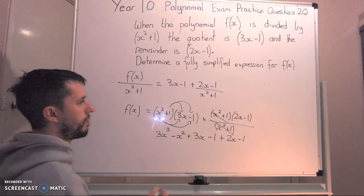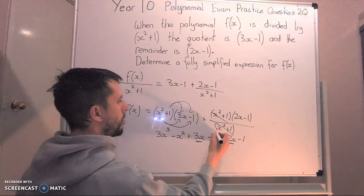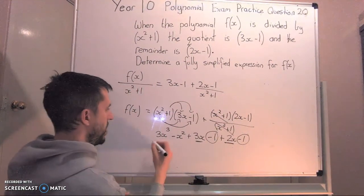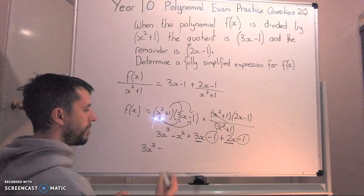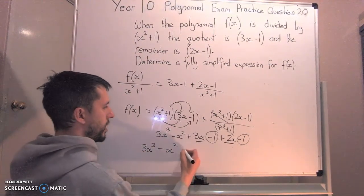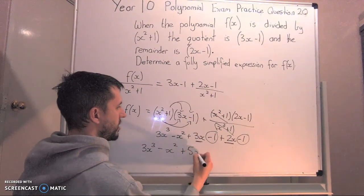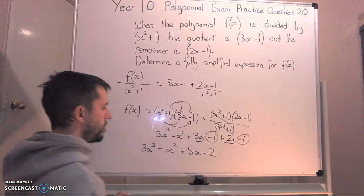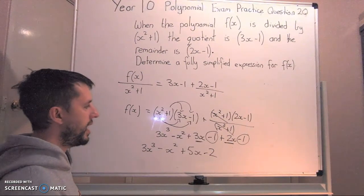Now I need to simplify. I've got 3x and 2x, and negative 1 and negative 1. That leaves me with 3x to the power of 3 minus x to the power of 2. 3x plus 2x is 5x, and negative 1 take 1 is negative 2. This gives me my polynomial in a simplified expression.